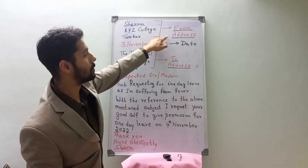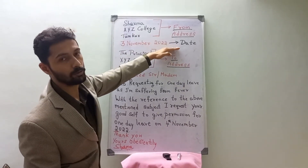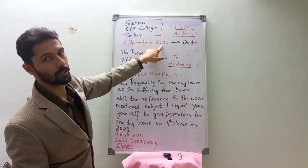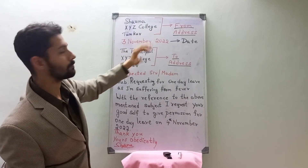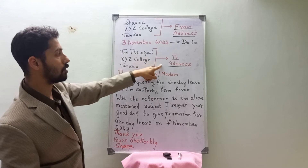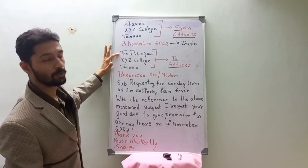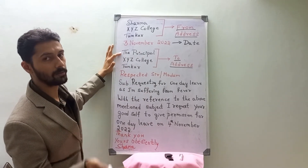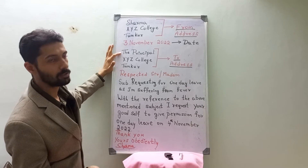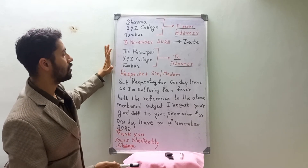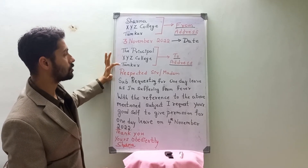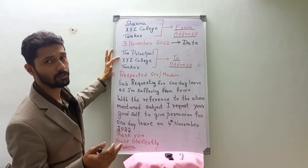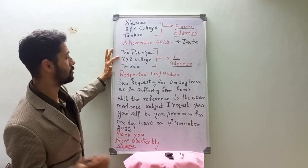The second step is date. You should write the date, for example, 3rd November 2022. Next is the to address — for whom you are writing, the class teacher, the principal, or the headmaster or headmistress. For example, the Principal, XYZ College, Tumkur — you can fill in your own college name here.